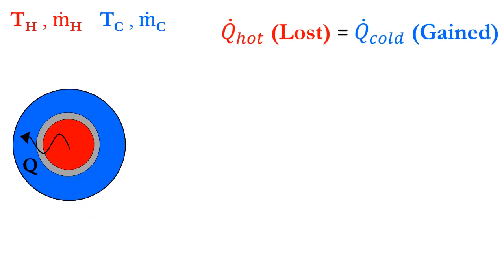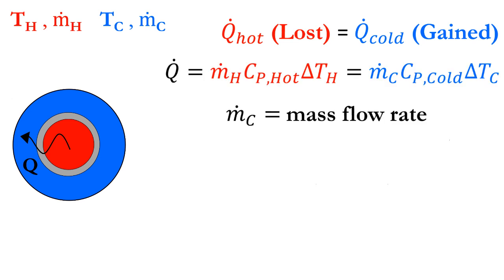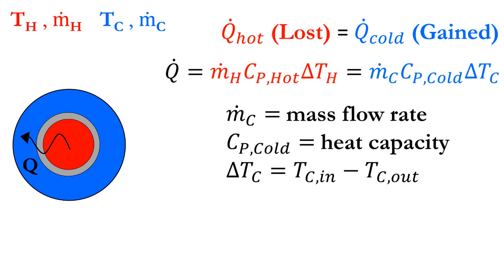The heat transfer rate, or heat duty, can be calculated with this equation, where m dot is the flow rate, Cp is the heat capacity, and delta T is the change in temperature for either the hot fluid or the cold fluid.